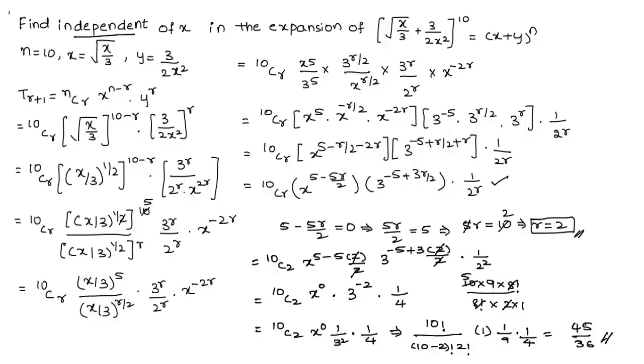So the independent term of the given binomial expression is 45/36. This was a basic walkthrough on how to solve for the independent term of x in a binomial expansion. Hope you understood the concept. Do like and subscribe to Wittish Academy. Thanks for watching, have a good day.